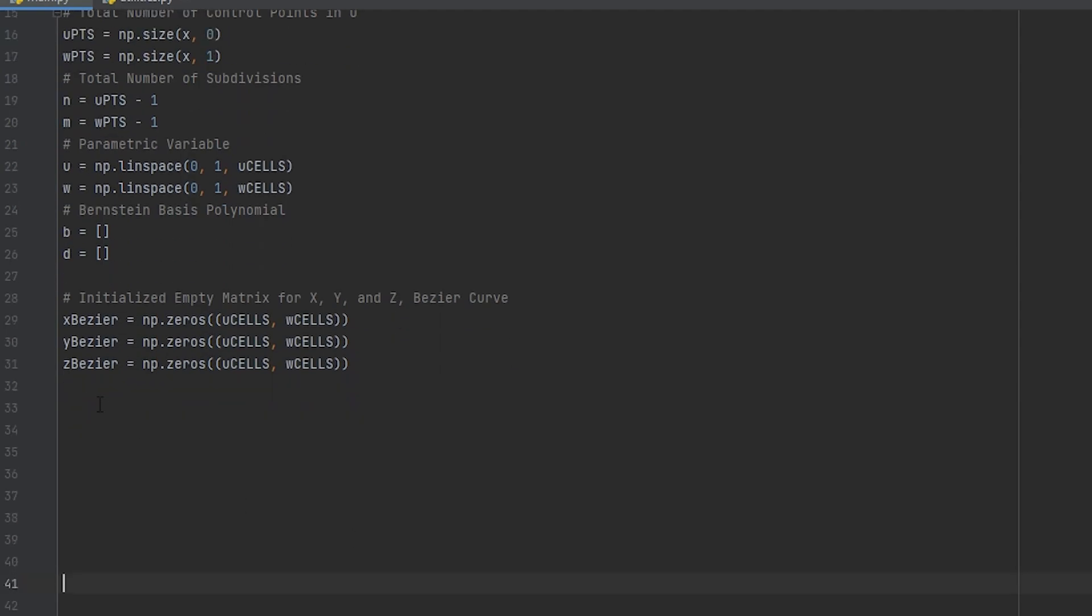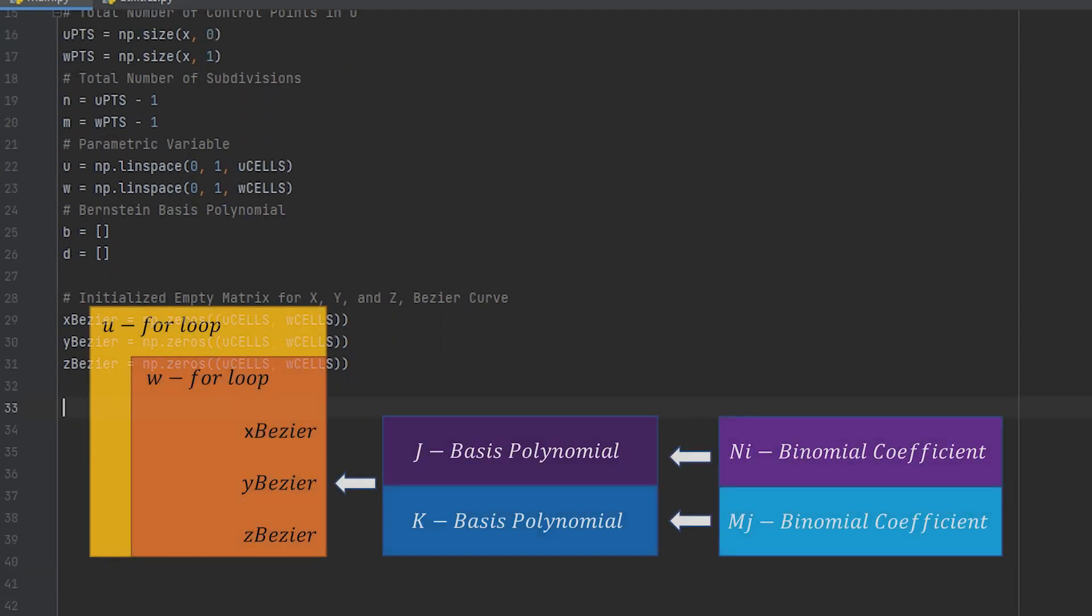Let's just take a second to discuss the layout of the code. Right now, we will create a function to get the binomial coefficients and then another function to get the basis polynomials. These two functions will be called inside the main loop where we update the Bezier surface. So the skeleton of the code will look like first, two binomial coefficient functions, one for U and one for W, two basis polynomial functions, one for U and one for W, and the main loop which consists of two nested for loops, one loop for U and one loop for W.